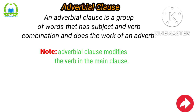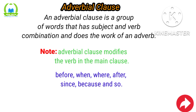The adverbial clause usually starts with conjunctions such as: before, when, where, after, since, because, and so. We are going to explain this under four or five types of adverbial clause.